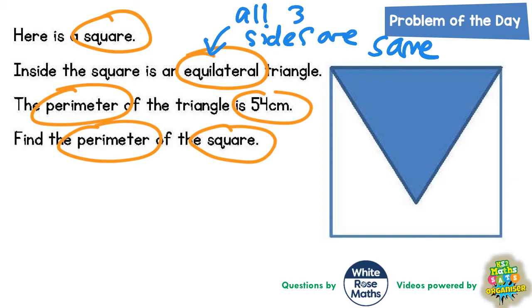It also means that all three angles are the same, but we don't actually need to know that information for this question. We do need to know that all three sides are the same.